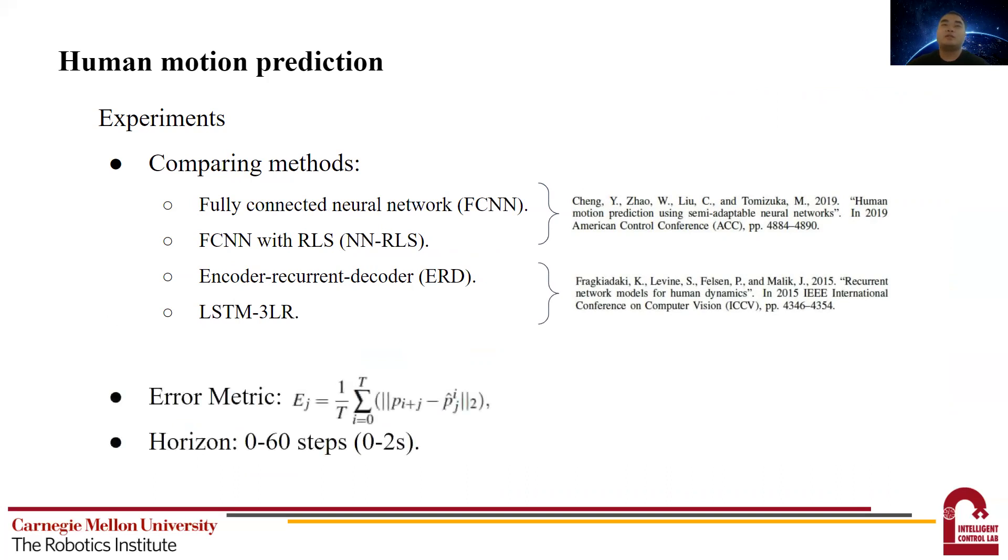We define the error metric as following. This essentially describes the average prediction error for each prediction step. For the experiments, we test a prediction horizon from 0 to 60 time steps, which corresponds to 0 to 2 seconds.